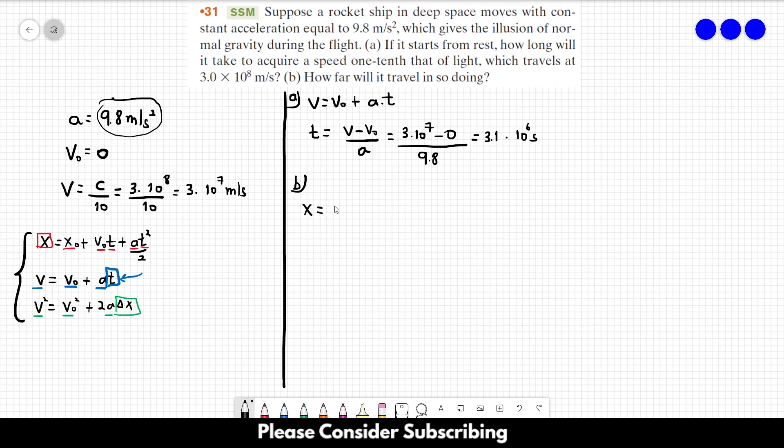So x = x₀ + v₀t + at²/2. The initial speed is zero, so that term goes away. The initial position, let's call it zero. So x = at²/2.